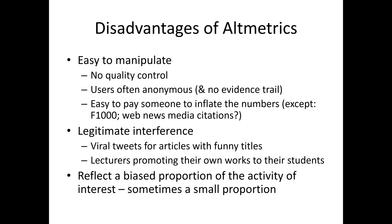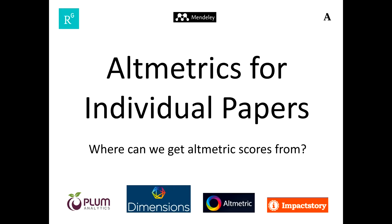A third disadvantage is that altmetrics reflect a biased proportion of the activity of interest, sometimes a small proportion. Altmetrics never reflect everything you want to measure and often represent a biased subset. For example, if you're interested in public interest in a topic and use Twitter as a proxy, maybe only 12% of people in the country you're studying use Twitter — a small proportion of the thing you're trying to measure. These are substantial disadvantages requiring careful use of altmetrics.